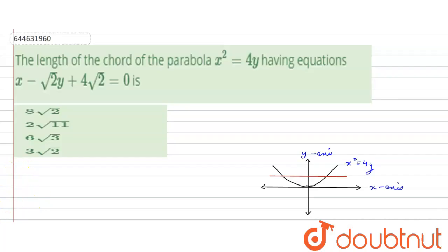The question says that the length of the chord of the parabola x square is equal to 4y having equations x minus 2√y plus 4√2 is equal to zero.